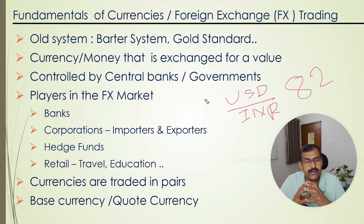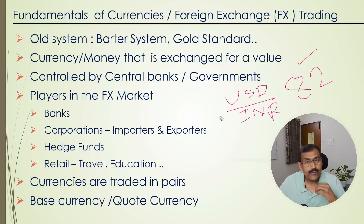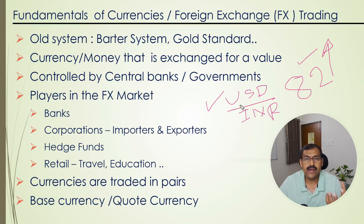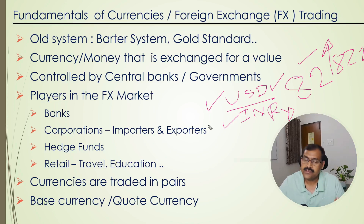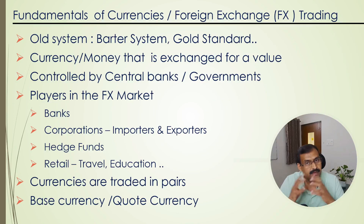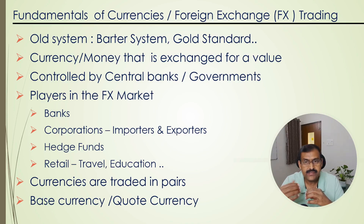Let us understand how a currency pair's value goes up or down. Take the USD/INR pair — USD is the base currency and INR is the quote currency, currently at 82. When will this 82 go up? It can go up when the value of the US dollar in the market becomes stronger, or equivalently, when INR becomes weaker against USD — the quote value will go up, perhaps from 82 to 82.1 or 82.2. When will the value go down? The value will go down when USD becomes weaker against INR, which also means INR is becoming stronger against USD. There are various factors that influence whether a currency is weaker or stronger against another, which we will discuss shortly.